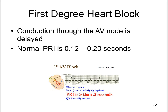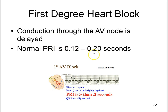First degree heart block: conduction through the AV node is delayed. The normal PR interval — the distance from the P wave to the R — is 0.12 to 0.2 seconds.